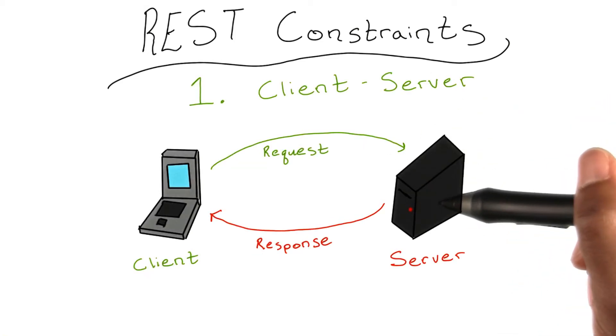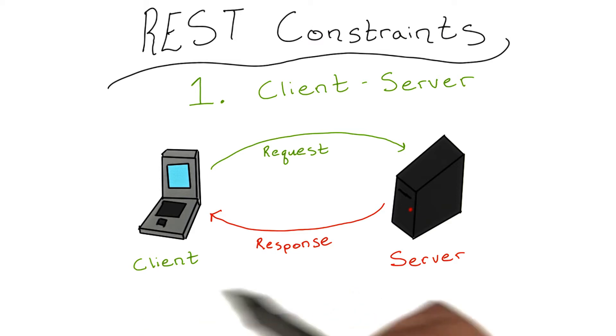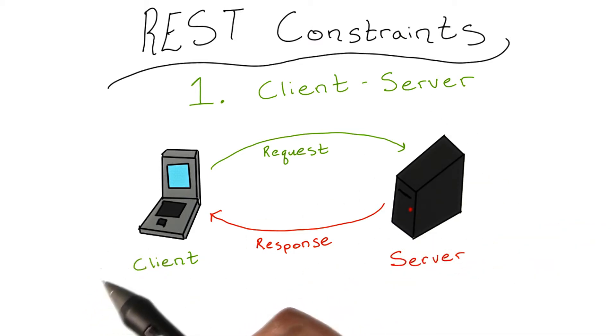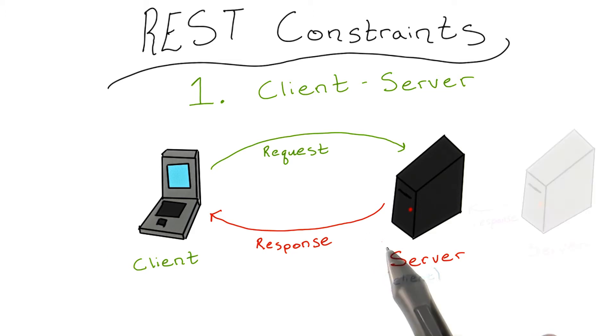The first constraint of a RESTful implementation is the separation of clients and servers. A client is defined as a machine requesting a resource, where the server is the machine that responds with the requested resource. A machine can function as a client and as a server, but for the duration of an HTTP request and response cycle, it must assume the role as either the requester of the information or the holder of that information.